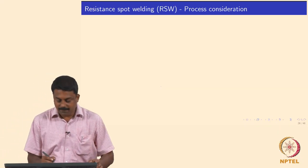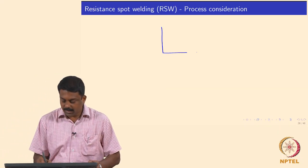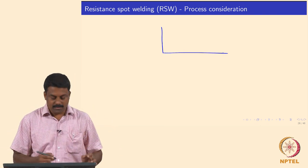Continuing from last class, we looked at the weld growth curves. The weld growth curve plots weld nugget diameter as a function of current or time, and from it we can identify I_max and the critical diameter required for the engineering application.